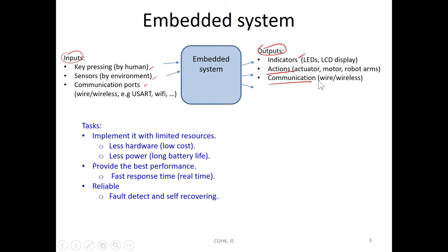The requirement of an embedded system is lower cost — specifically, less hardware. Less hardware means consuming less power, so you get a longer battery life. Embedded systems are normally powered by battery, not by domestic power like 200 volts, so battery life is very important. Of course, performance is also very important. If your program achieves the best performance, you can use lower-cost hardware and keep battery life longer.